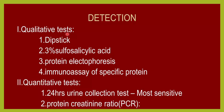There are qualitative as well as quantitative tests. Qualitative tests will only tell you whether protein is present or not, or they might give a semi-quantitative measurement — for example, dipstick, 3% sulfosalicylic acid, protein electrophoresis, or immunoassay for a specific protein. Quantitative tests quantitate the urine proteins, such as the 24-hour urine for total proteins and the protein-creatinine ratio done on a spot sample.